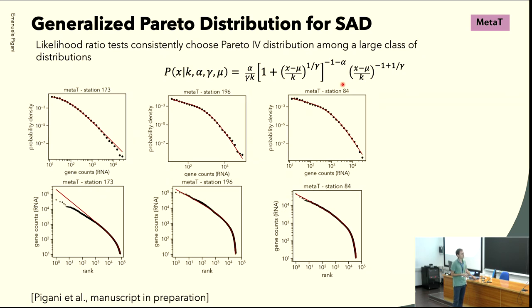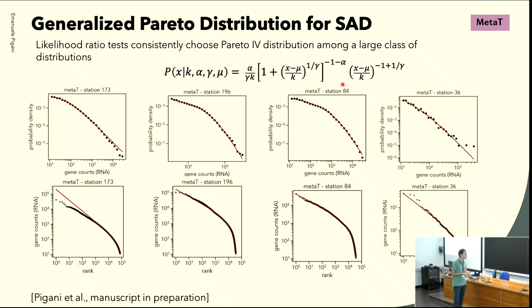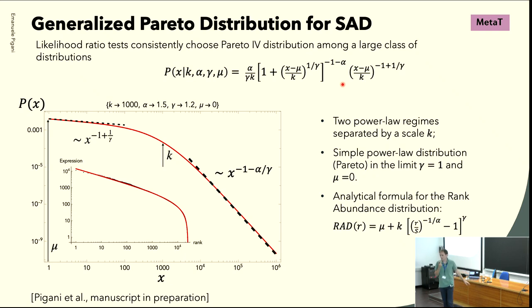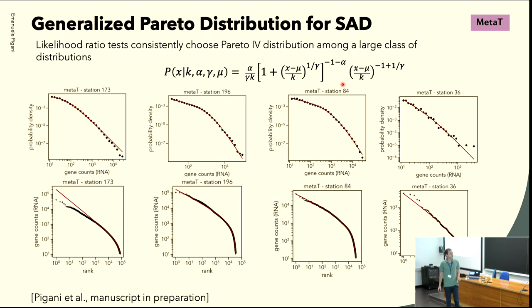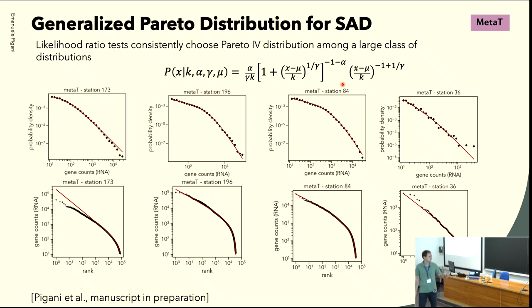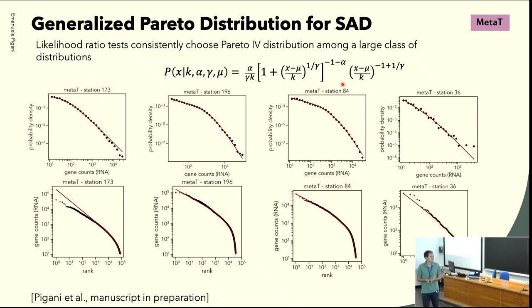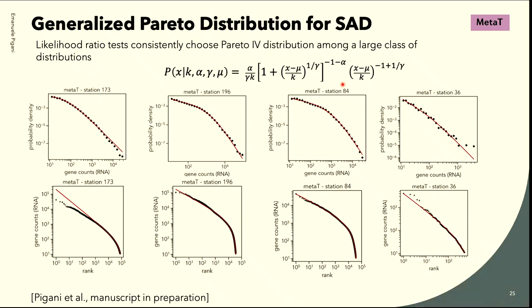Among several distributions, this is the only one able to fit the data across several orders of magnitude. The rank-abundance distribution spans five orders of magnitude. To us it was surprising that in a noisy dataset like the Tara one, you can have a single function that describes five orders of magnitude of gene abundances expressed in a metatranscriptome — a collection of many individuals.